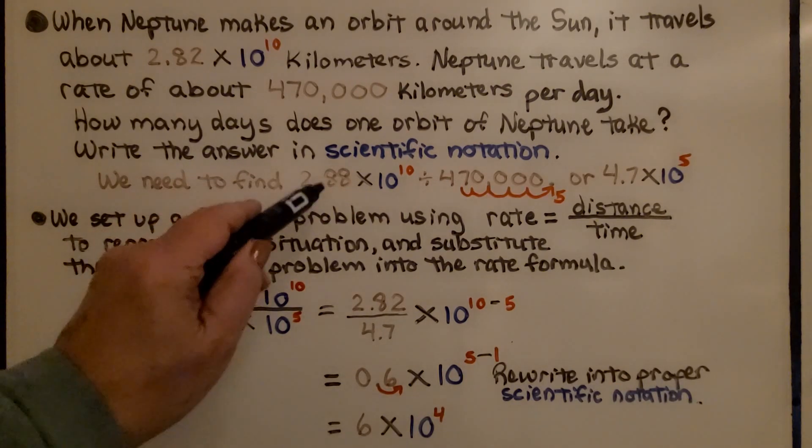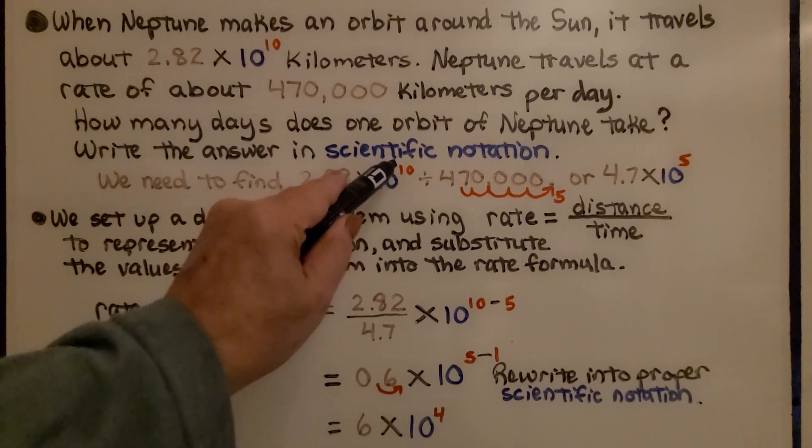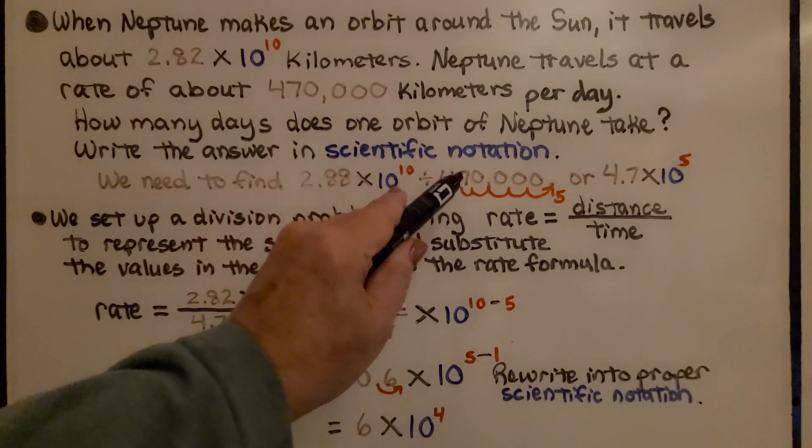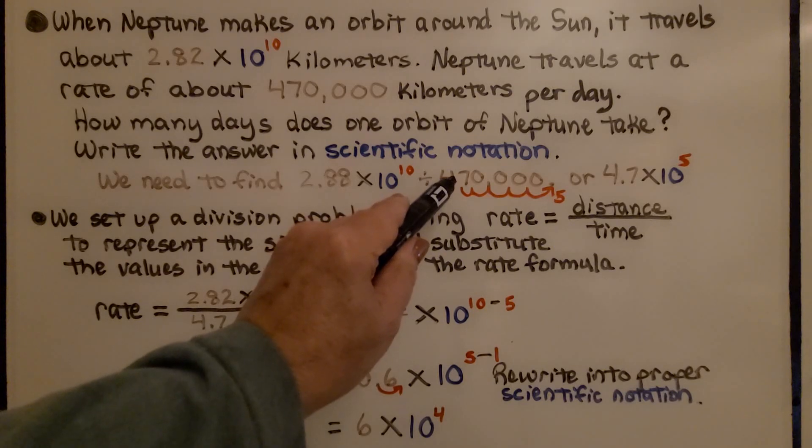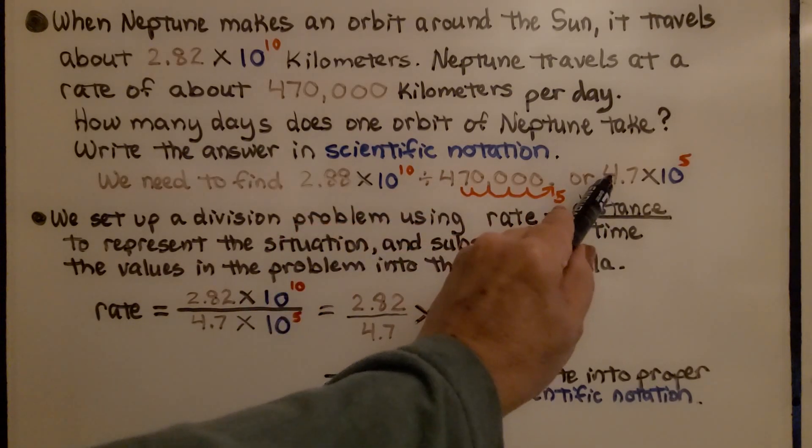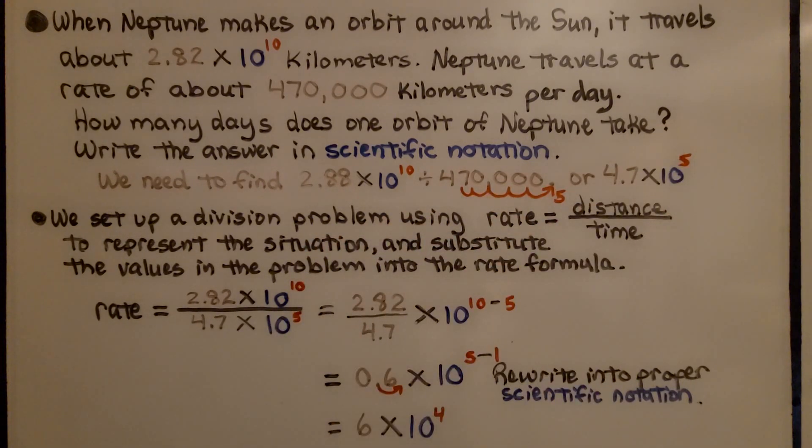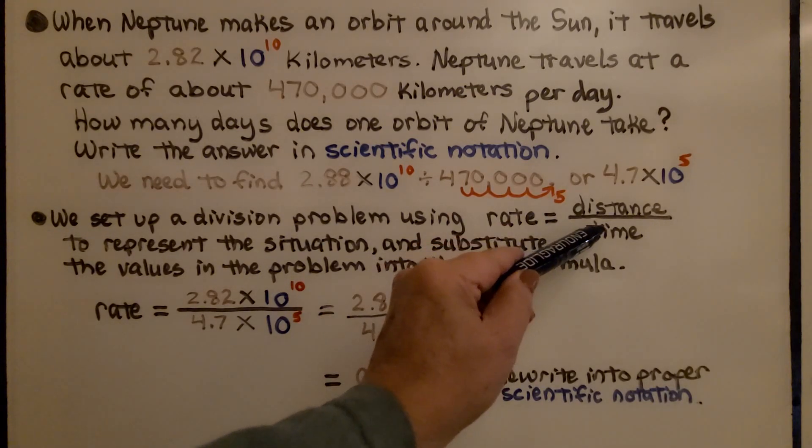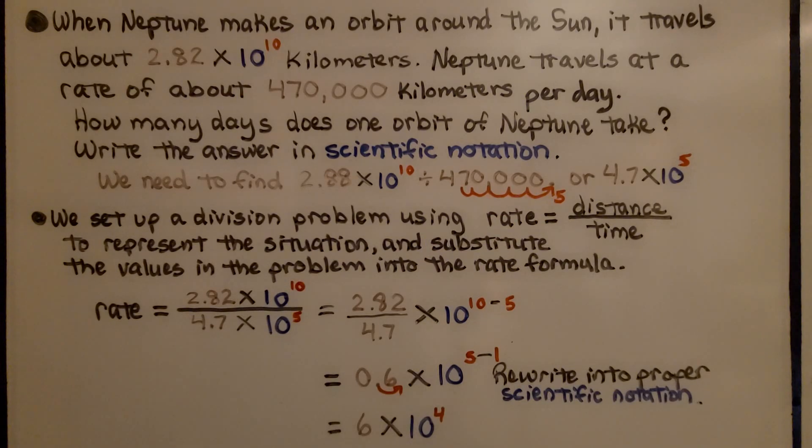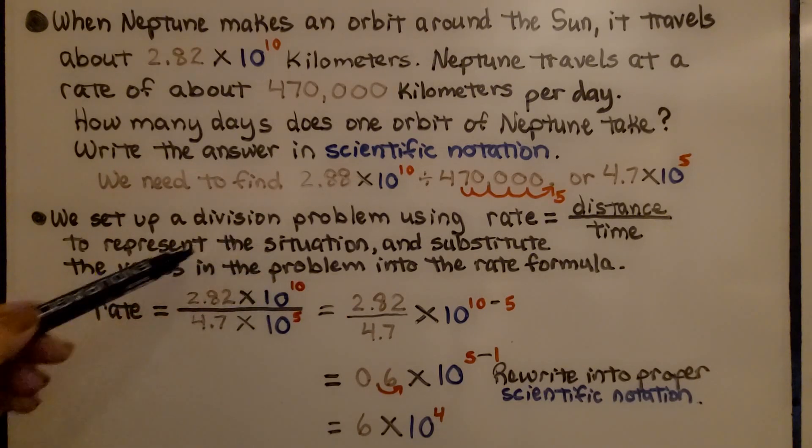So we need to find 2.82 times 10 raised to the 10th power divided by 470,000. So we're going to write 470,000 in scientific notation as 4.7 times 10 raised to the 5th power. We got 5 hops, so it's raised to the 5th power. We set up a division problem using rate equals distance over time to represent the situation and substitute the values in the problem into the rate formula. So our rate is equal to 2.82 times 10 raised to the 10th power divided by 4.7 times 10 raised to the 5th power.